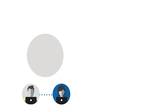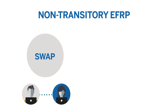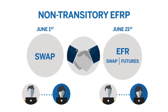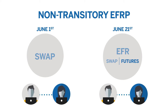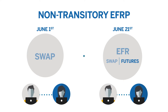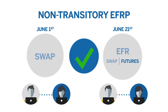For example, two participants agree to enter into an uncleared OTC swap on June 1st. Three weeks later, on June 21st, participant A is concerned about the credit risk of participant B. Participant A approaches participant B and agrees to transact an EFR, which has the economic effect of canceling the original swap and leaving both parties with a cleared futures contract. This would be a legitimate use of an EFR because the two transactions were independent, and the original related position component of the EFR was exposed to market risk.